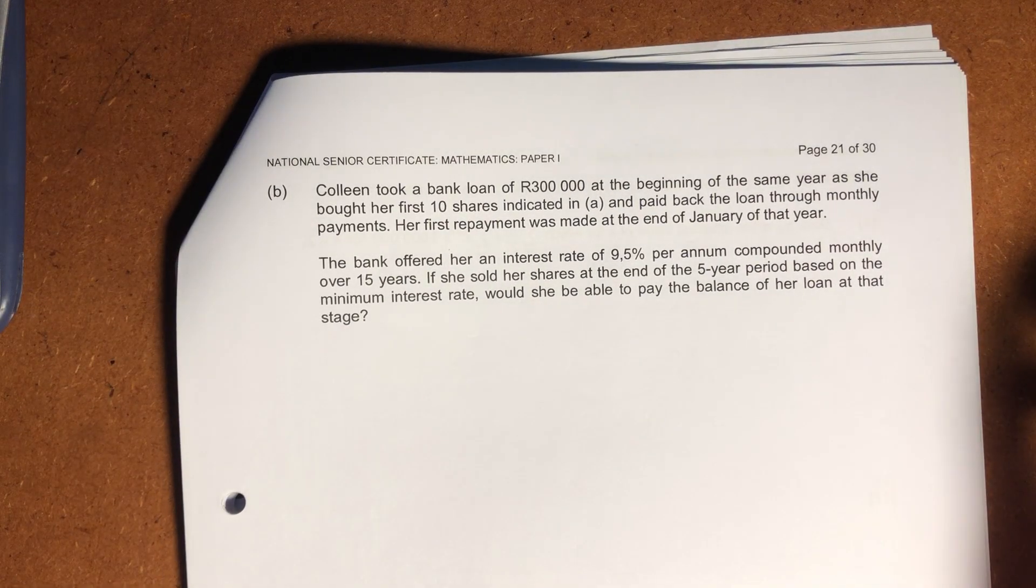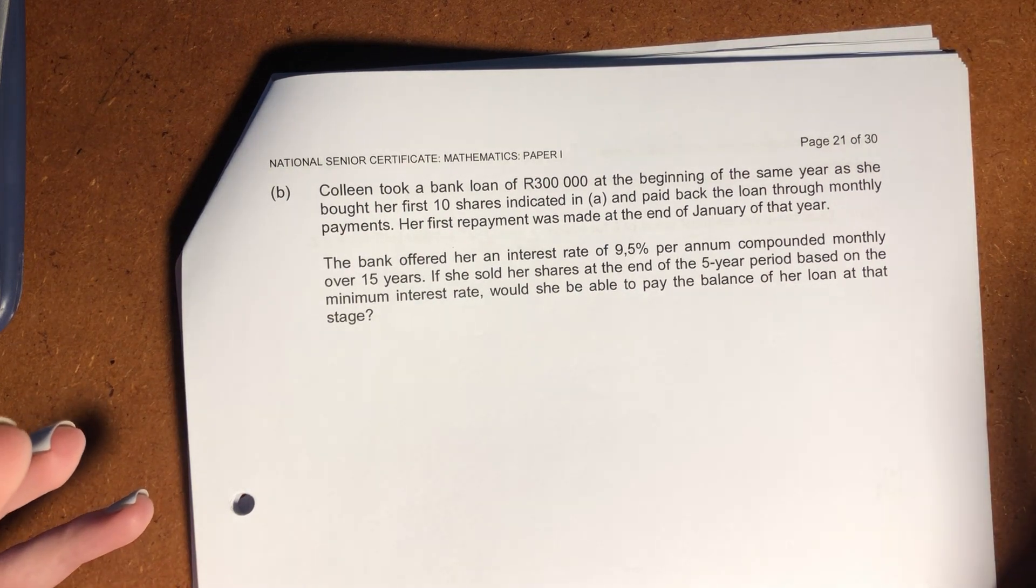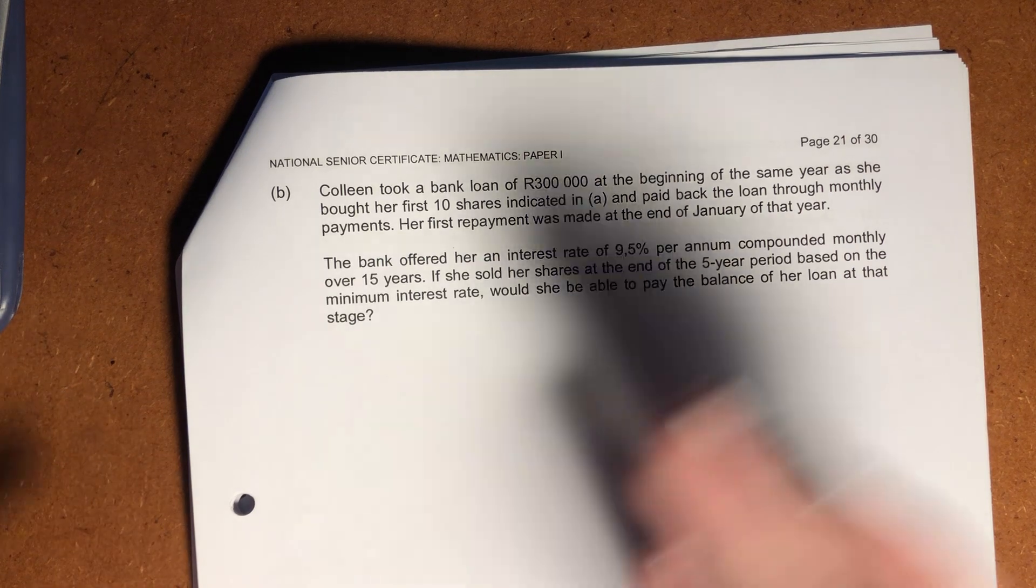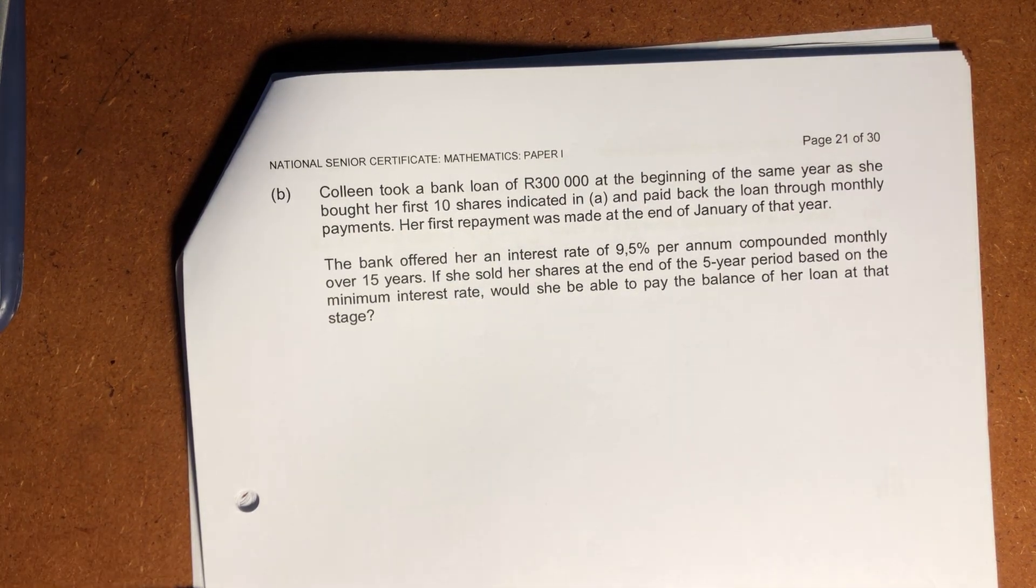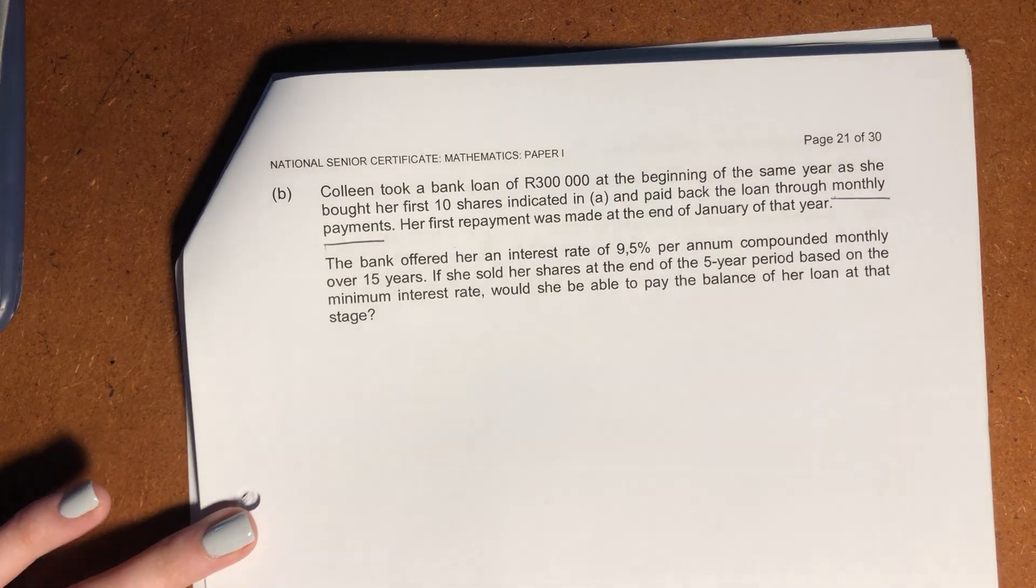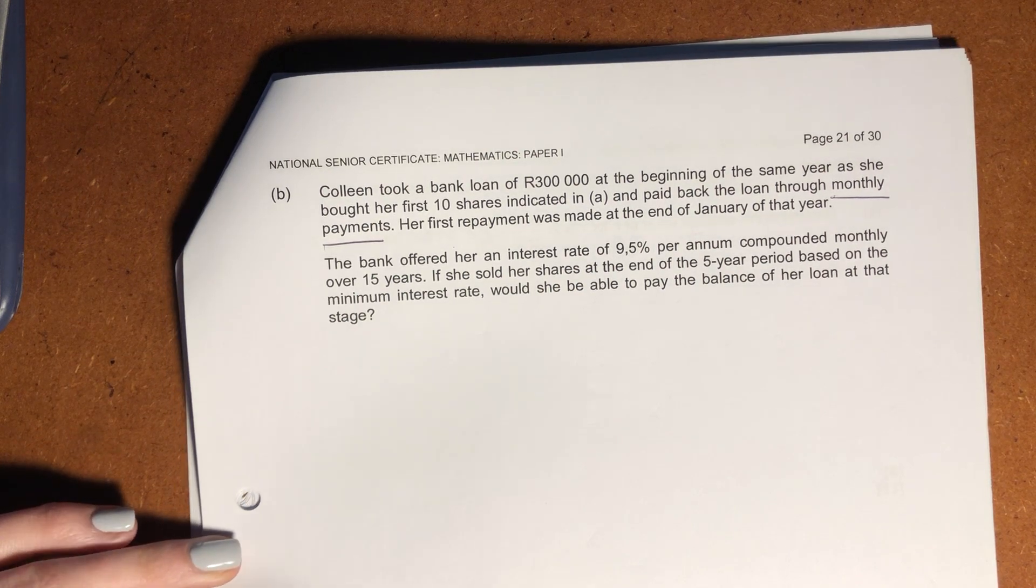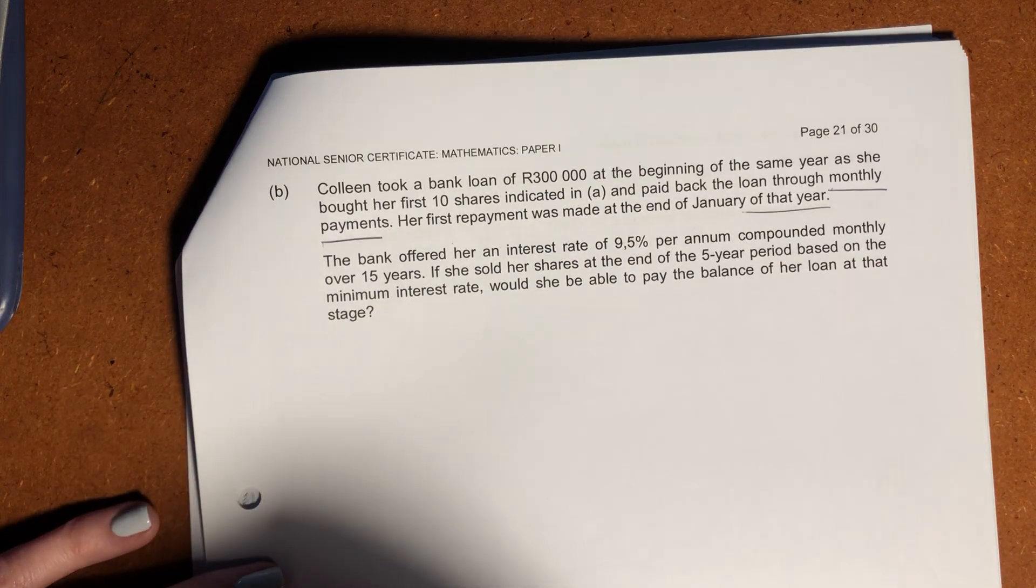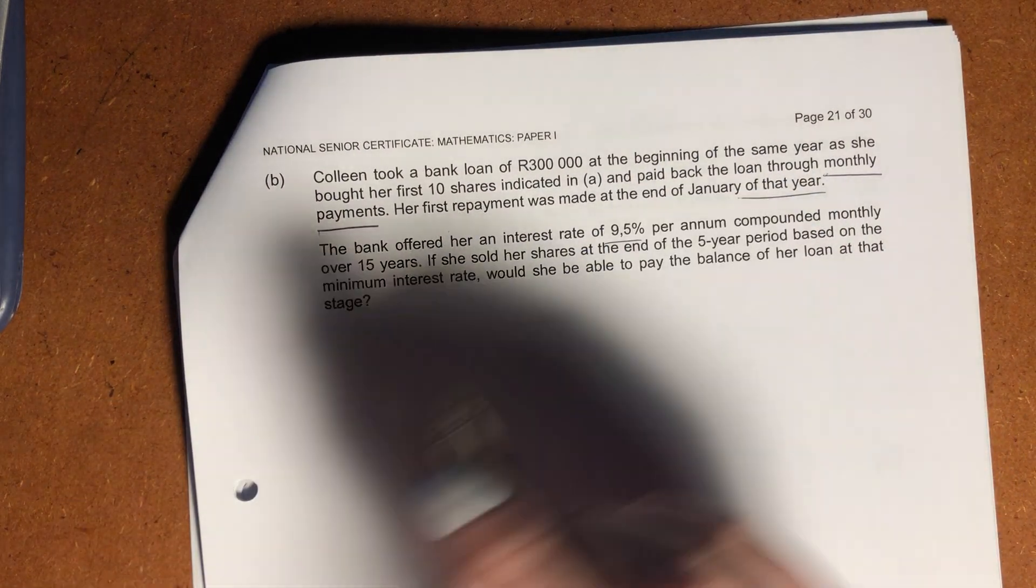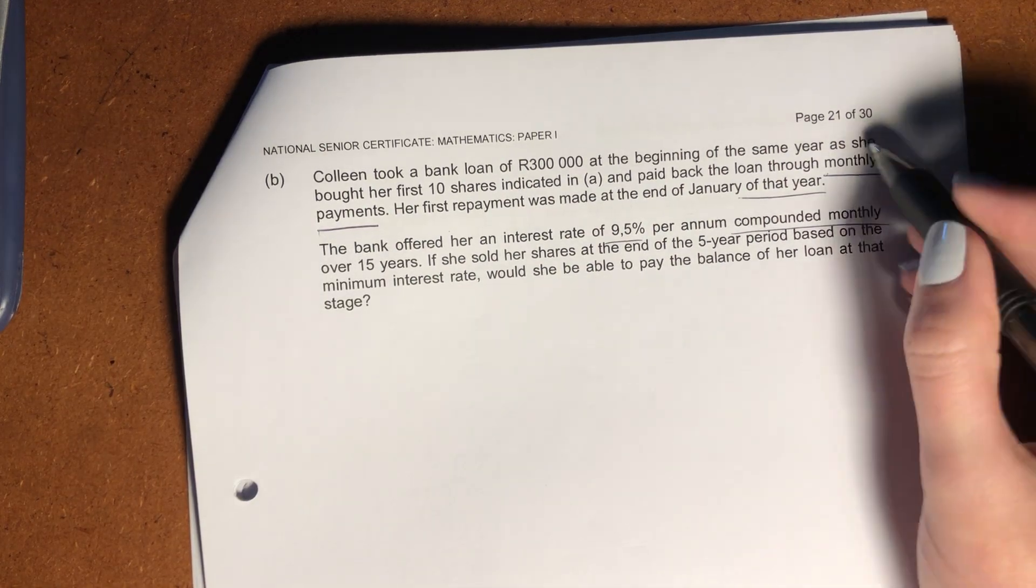Let's go into our next question with finance. Colleen took a bank loan of 300,000 Rand at the beginning of the same year as she bought her first 10 shares. So it's still the same scenario, right? We're probably going to have to leverage our answer in the previous question to answer this question. So the same year that she bought her first 10 shares indicated in A and paid back the loan through monthly payments. So this one's monthly. That's interesting because before it was quarterly, so we need to maybe think about is there any sort of adjustments we need to make. Her first repayment was made at the end of January of the first year. So again, we have monthly installments and it's in arrears. It's not in advance, so we don't have to make any adjustments.